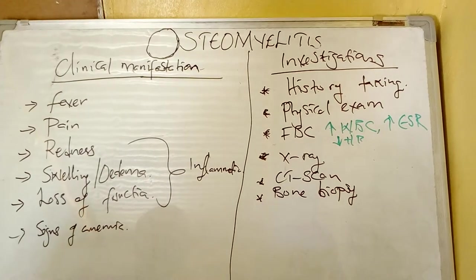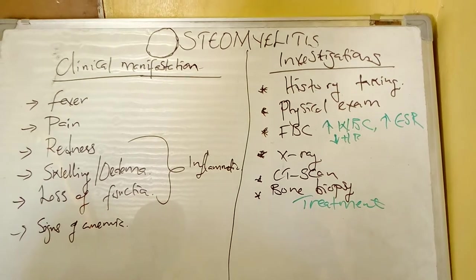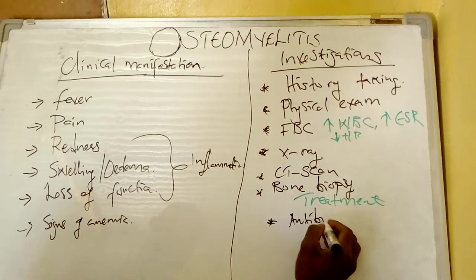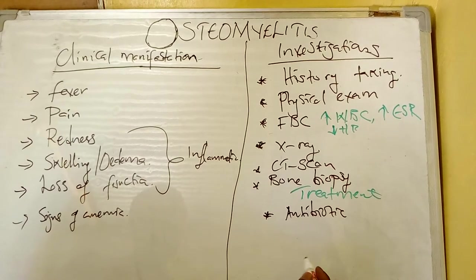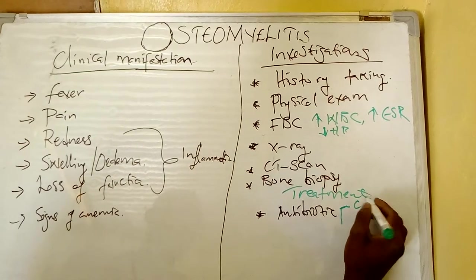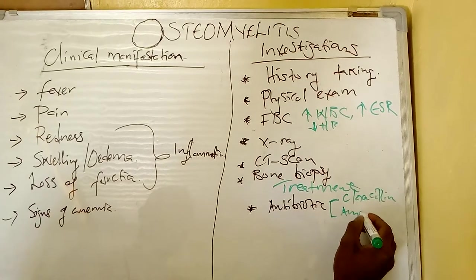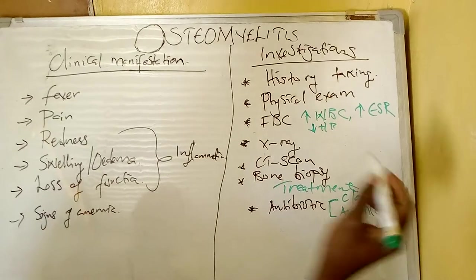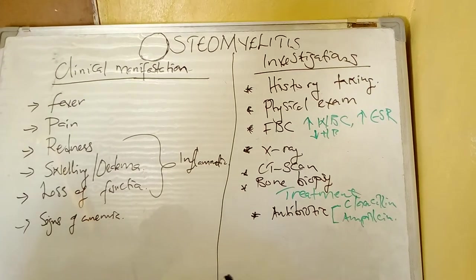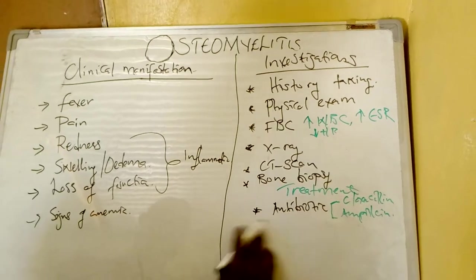Now from the investigations, let us look at the treatment. The treatment includes giving antibiotics — empirical antibiotics. The names of antibiotics you can give include cloxacillin, or ampicillin combined with cloxacillin, which we call ampiclox. You can also give crystalline penicillin. These are the antibiotics used.